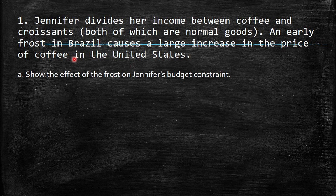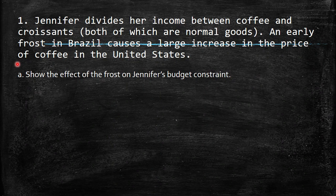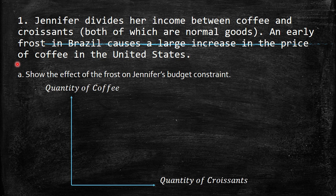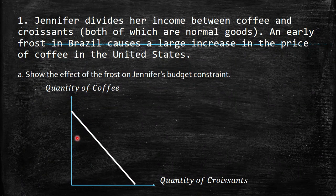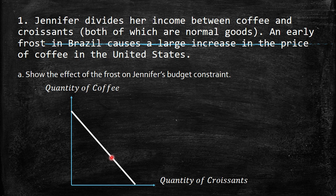An early frost in Brazil causes a large increase in the price of coffee in the United States. First, show the effect of the frost on Jennifer's budget constraint. Here we label the axes as quantity of coffee and quantity of croissant — it doesn't matter which side you put them on. Here is the budget constraint, which provides the infinite quantity of bundles that represent the maximum of your income — spending all income available. If you are below, you spend less than available; if you go above, you spend more, which is not possible.